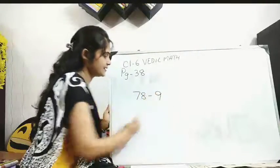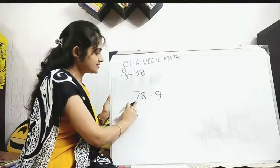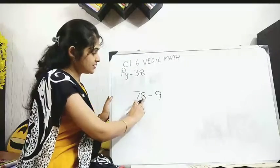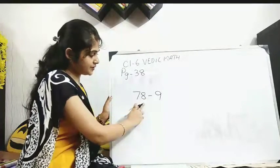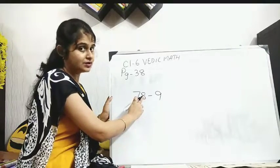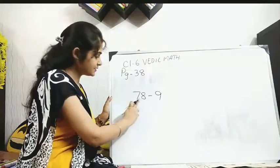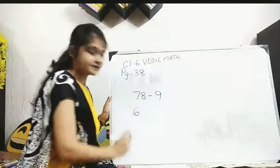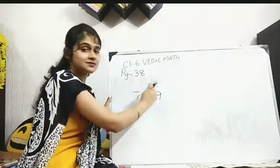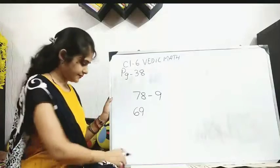78 minus 9. Now we need to do directly. Okay, I'll show you. See, 7. So you can understand from here, this is match. Now 8, 9. When you put 9 here, you just visualize. That means this is not greater. So this will be mismatch. This is match, this is mismatch. So when this is mismatch, then 7 will become 6. What is 9's complement? 1. 8 plus 1 will become 9. Your answer is 69. Next.